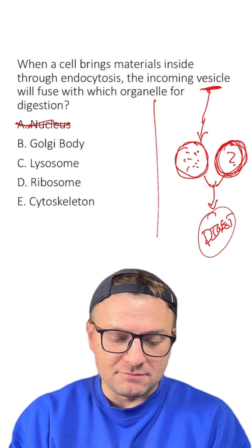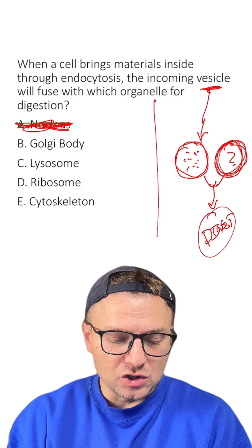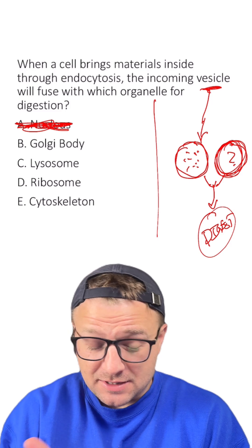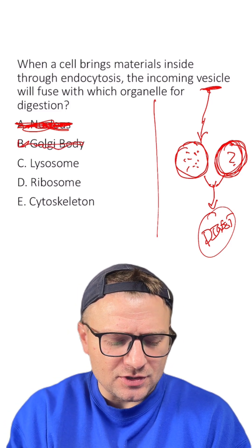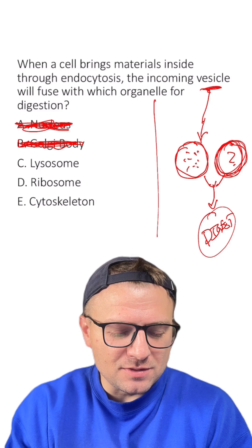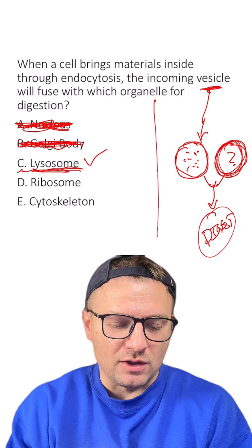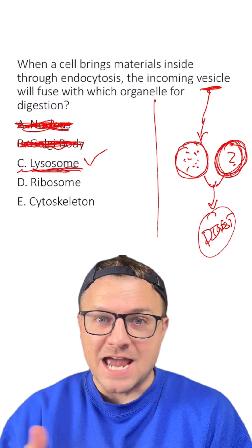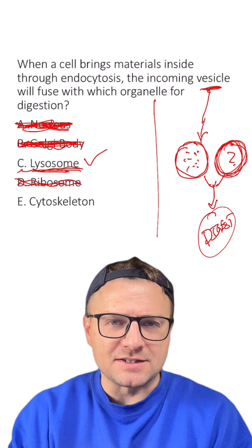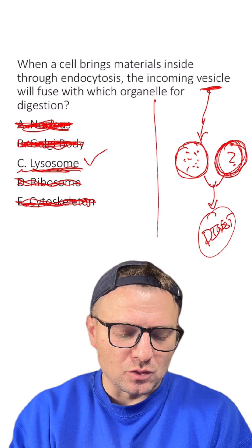Well, it's not the nucleus because there are no enzymes really in the nucleus for digestion. The Golgi body — that's not a bad answer; it does sometimes have enzymes, but it's more for packaging, so it's not the Golgi body. Lysosome sounds like the right answer to me — I always think of this as the custodian of the cell; it breaks things down and it has enzymes. Ribosome? No — ribosomes make proteins. And the cytoskeleton? No — that's our protein structure within the cell.